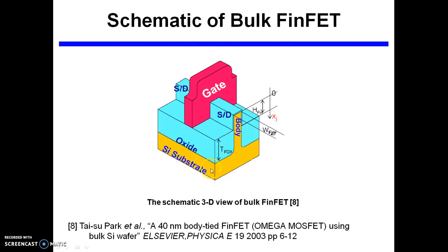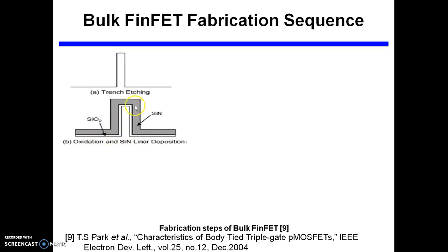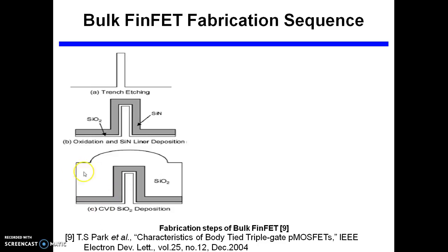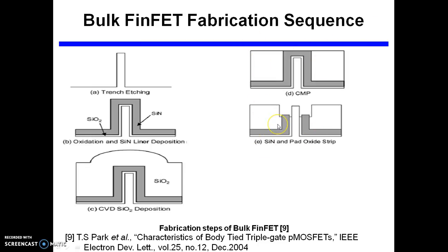The schematic of bulk FinFET consists of an Si substrate with a fin structure on top, source and drain formed on the fin, and a gate all around. The fabrication steps are: first, a trench is etched on the silicon wafer — the trench height decides the fin height — then covered with a silicon oxide layer, silicon nitride is deposited, and using CVD, SiO2 is deposited over this. Then using chemical mechanical polishing, it is polished until the silicon nitride layer is visible. Afterwards, the SiN layer is dipped, remaining trenches are filled, and the terminal oxide is grown.